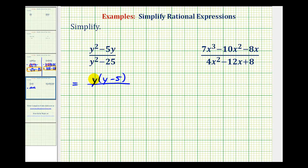Remember, we can always check this by distributing, and we do have y squared minus 5y in factored form. Our denominator is actually a difference of squares, so this will factor into two binomial factors.